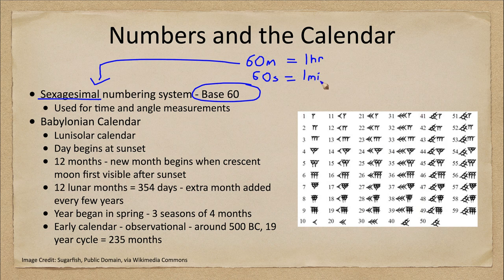This is all tied into the sexagesimal system. We also use this for angles: when we break up a degree, there are 60 minutes of arc in one degree and 60 seconds of arc in one minute of arc.